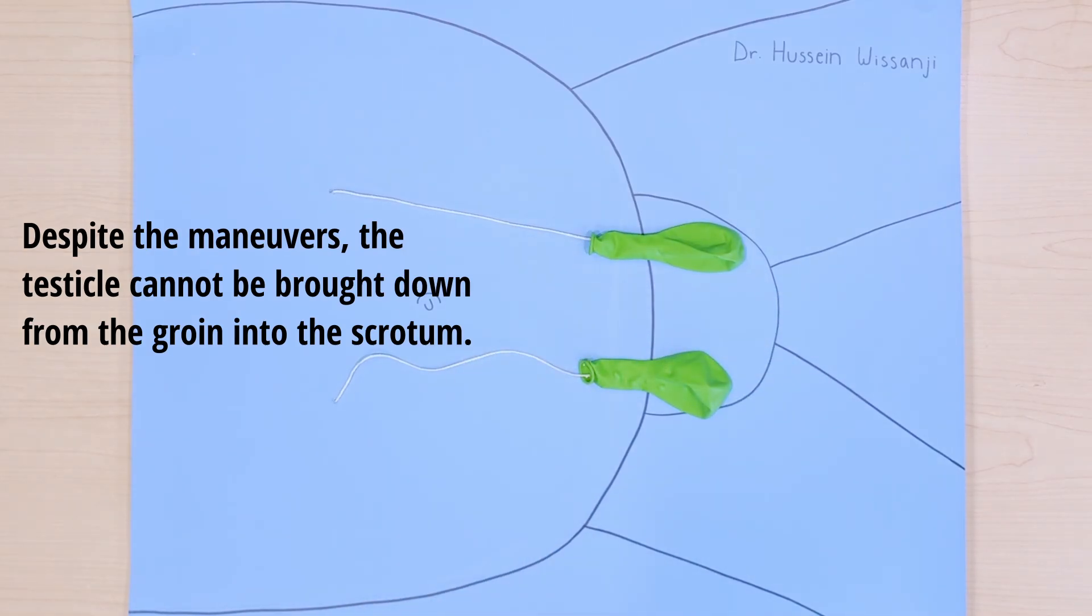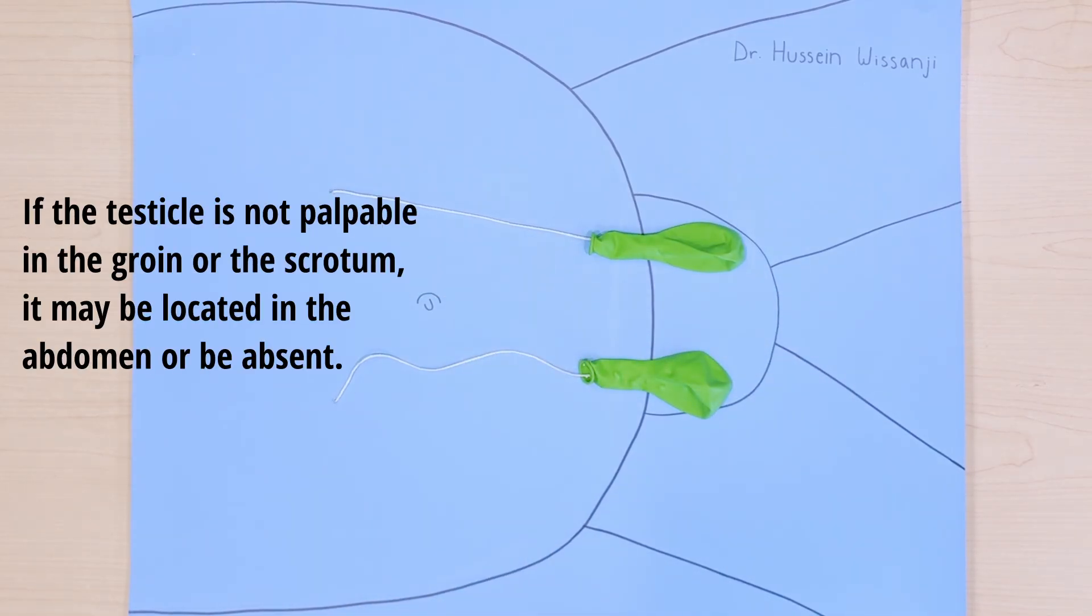There's a scenario where you cannot palpate a testicle in the scrotum or in the inguinal canal. In that case, the testicle might be intra-abdominally or might be atrophic or absent and you won't be able to palpate it.